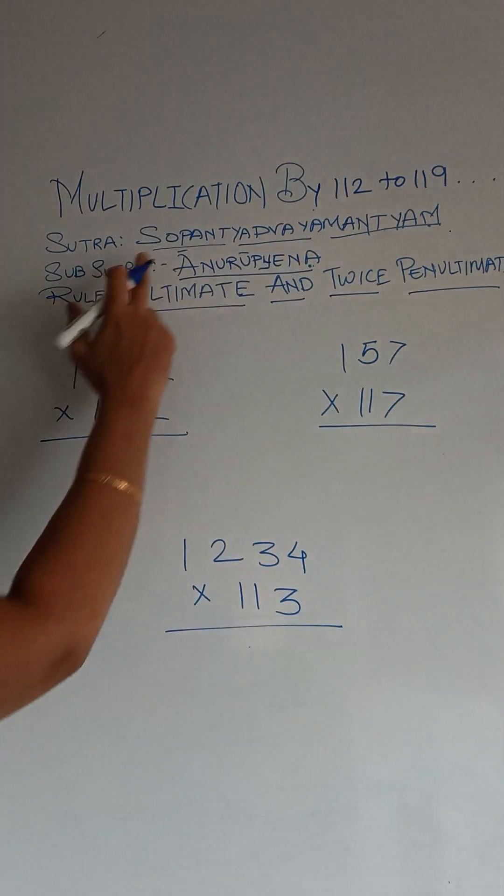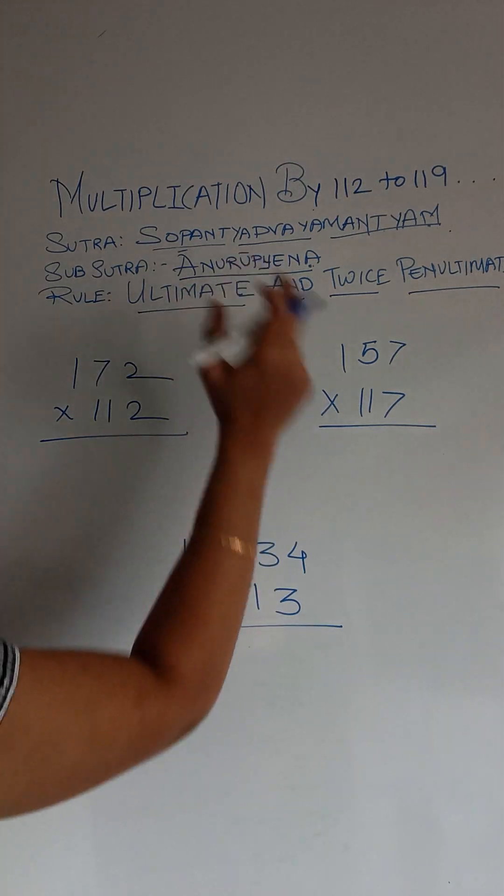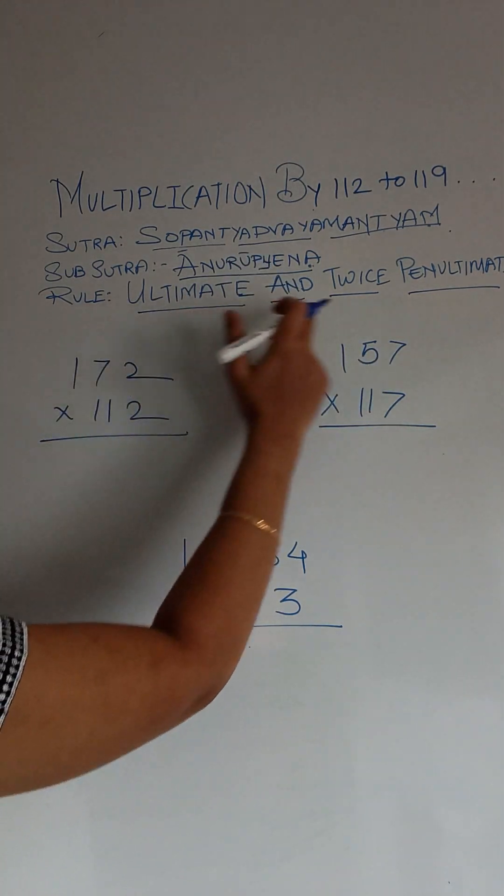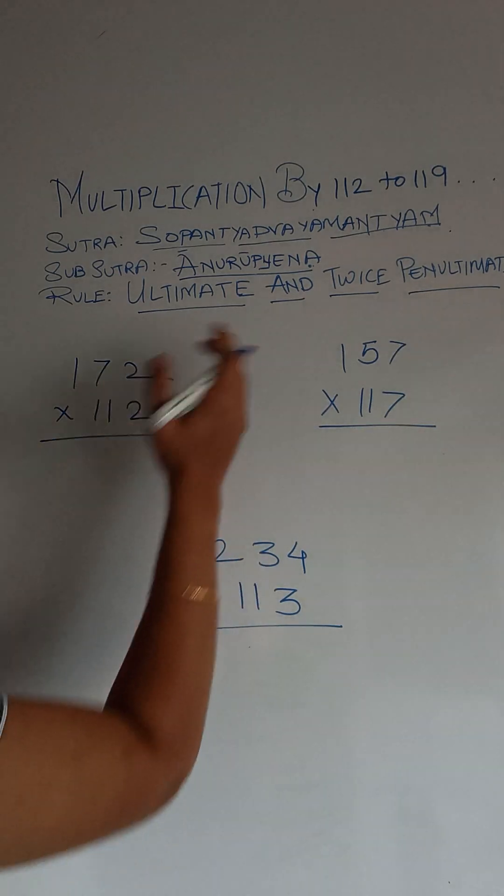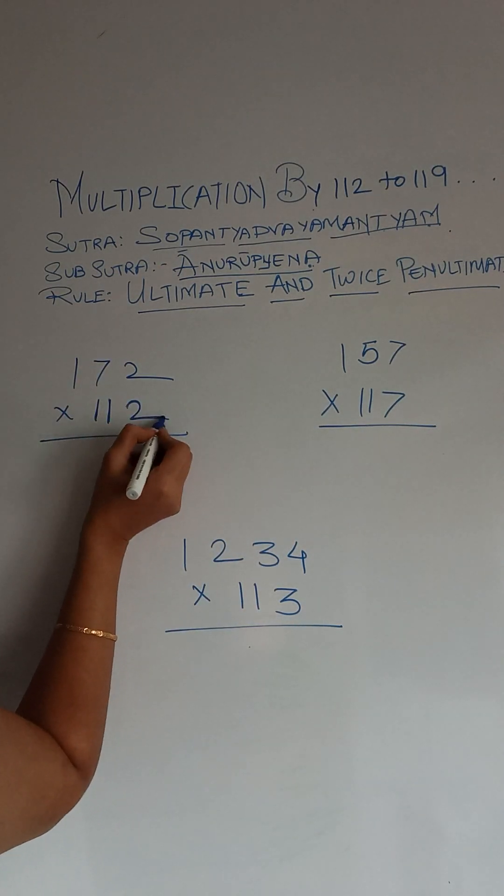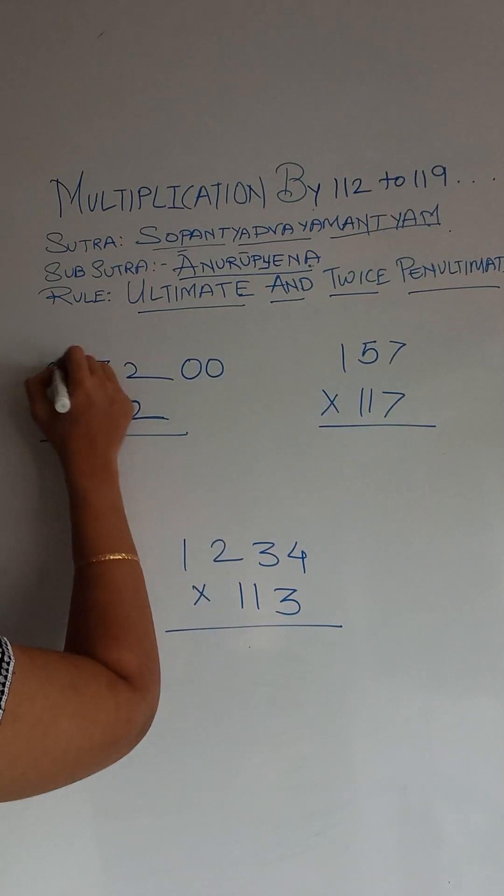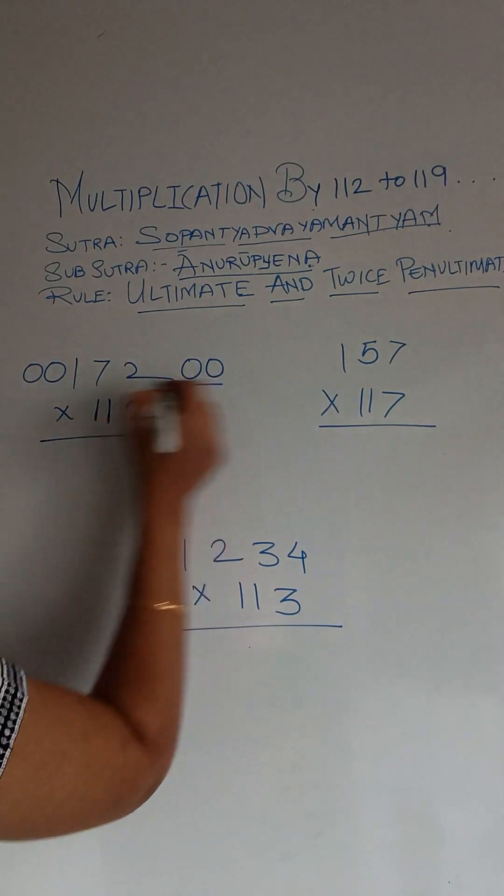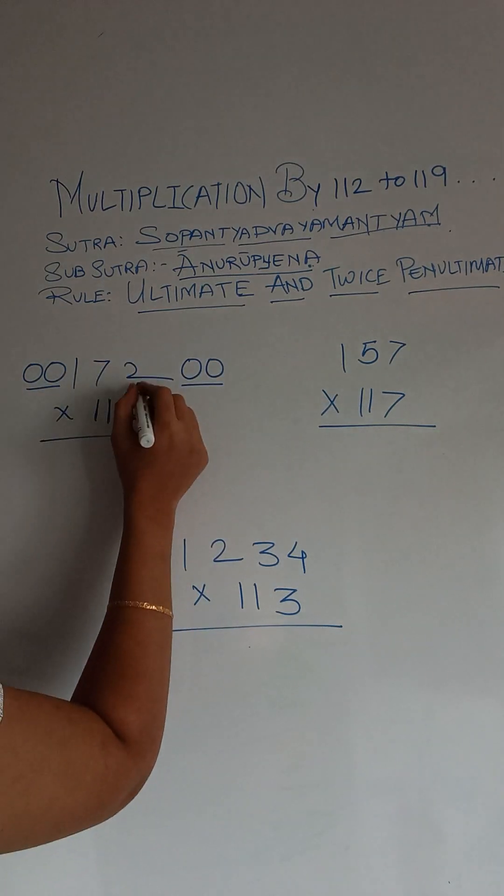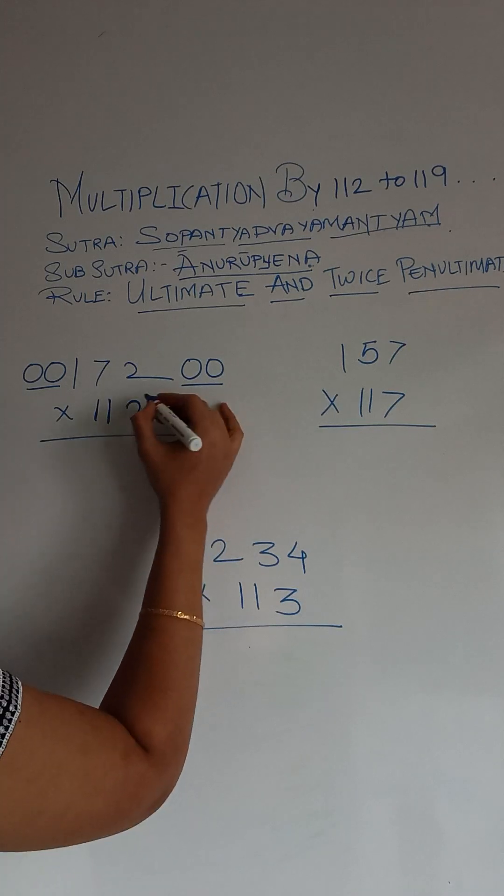So the sutra here is Sopantya Dwayam Antayam. Sub sutra we are using is Anurupena. So the rule is ultimate and twice dependent ultimate, same thing. But here, since our digit is a 3 digit number, we are going to add 2 zeros here. That is the sutra Anurupena we are using here. So we know that we are going to add these 3 digits. Alright, so let's start.